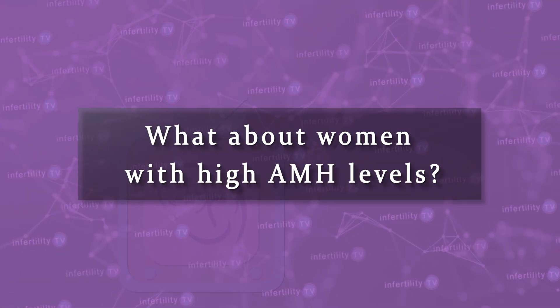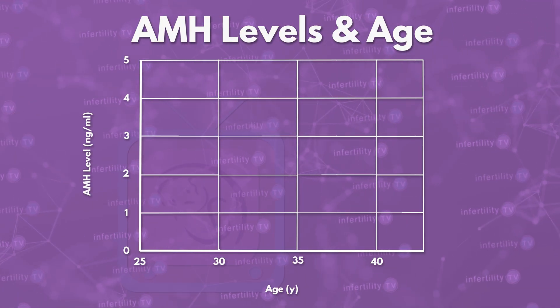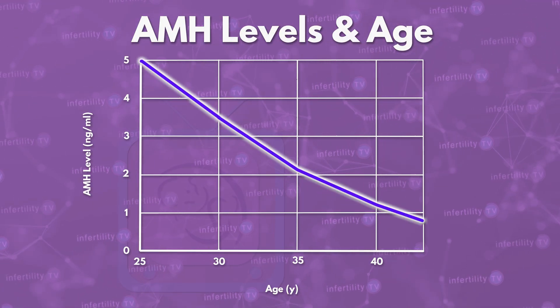What about women with high AMH levels? We are starting to learn more about this group as well. To determine if your AMH levels are high, the first thing you must understand is that AMH levels decrease with age. So a high AMH level for a 40-year-old woman may be average or even low for a younger woman. In order to determine if your AMH levels are high or low, you must know the range for your age group.